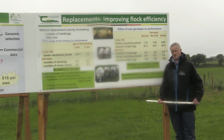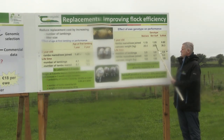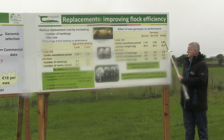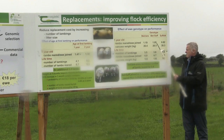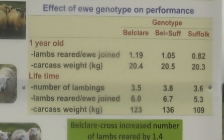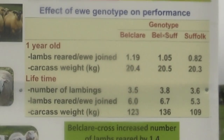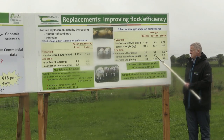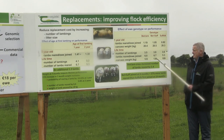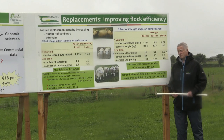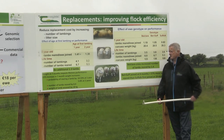Post-weaning, all lambs were put together as one group and drafted every three weeks for slaughter, with the last draft in late November or early December. Looking at the impact of ewe genotype on lambs reared per ewe joined for those that lambed at one year of age: relative to the Suffolk, the Belclare and the Belclare cross Suffolk produced an extra 0.37 and 0.23 lambs per ewe joined respectively. Lambs were slaughtered at a mean carcass weight of 20.4 kg. Over a lifetime, Suffolk ewes produced 5.3 lambs; the Belclere cross Suffolk produced an extra 1.4 lambs for a total of 6.7; and the Belclare produced 6 lambs — meaning changing ewe genotype yields approximately 1.4 extra lambs reared per ewe joined, equivalent to the price of a replacement joining the flock at 19 months.